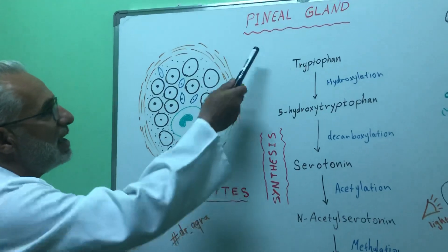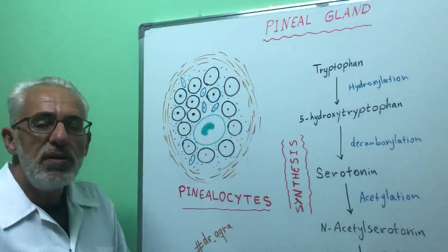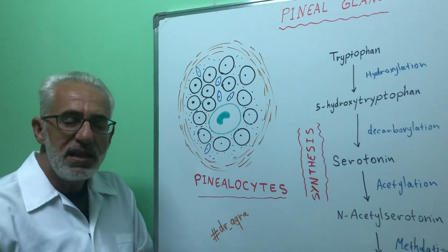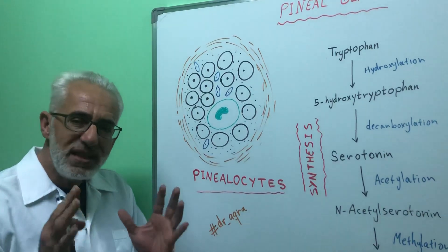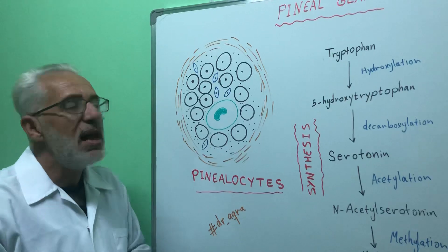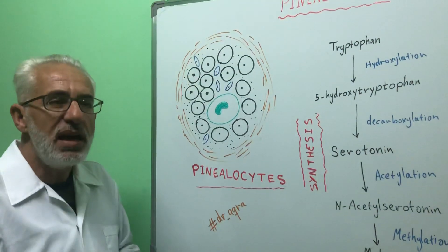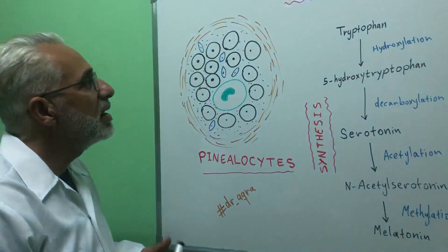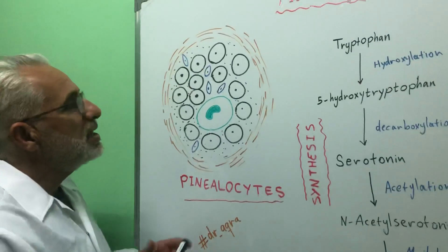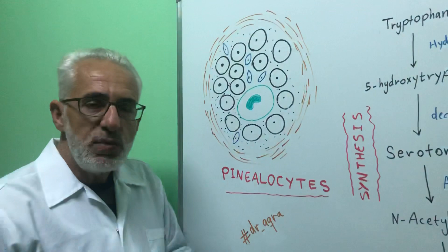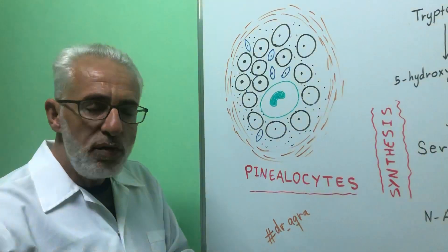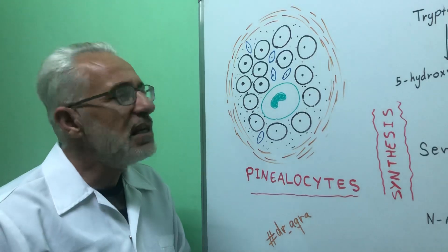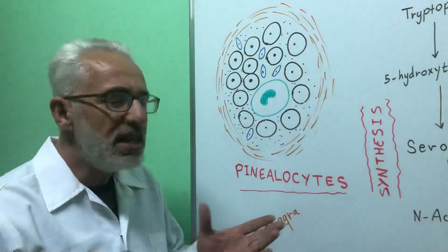The pineal gland, as a location, is found in the brain outside of the blood-brain barrier. It is one of five or six areas in the brain that are not covered by the blood-brain barrier. It is found in the epithalamus, which is a part of the diencephalon, between the two hemispheres of the cerebrum.